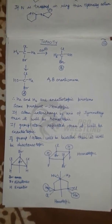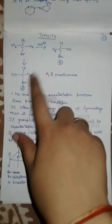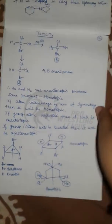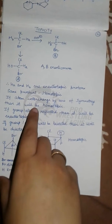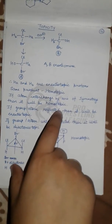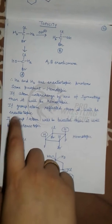If the product would be same, then H_A and H_B would be homotopic. If atoms interchange by axis of symmetry, then it will be homotopic. If the group or atom is reflected, then it will be enantiotopic.